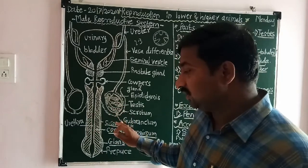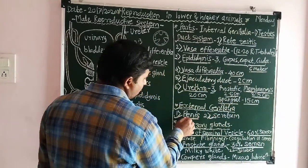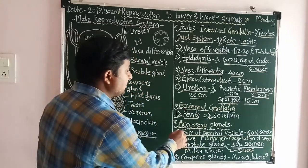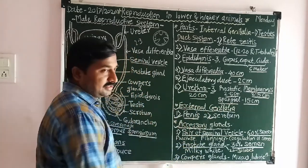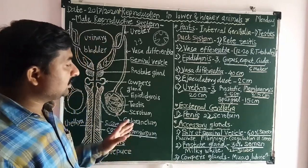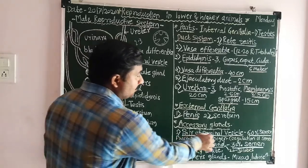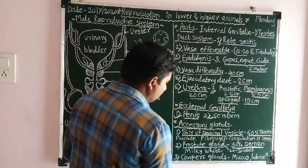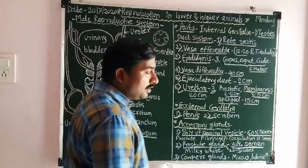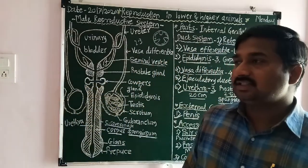The scrotum also gives protection to the testis. These are the two external genital organs: the penis and the scrotum. The male reproductive system consists of three types of accessory sex glands: a pair of seminal vesicles, a single prostate gland, and a pair of Cowper's glands.